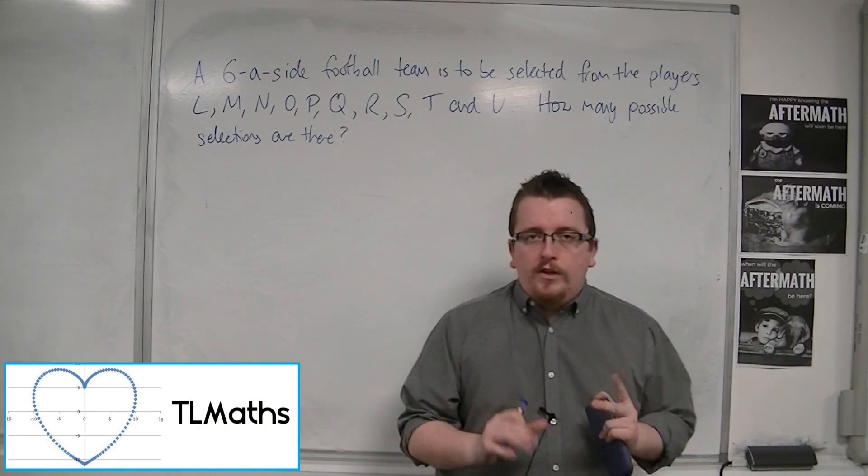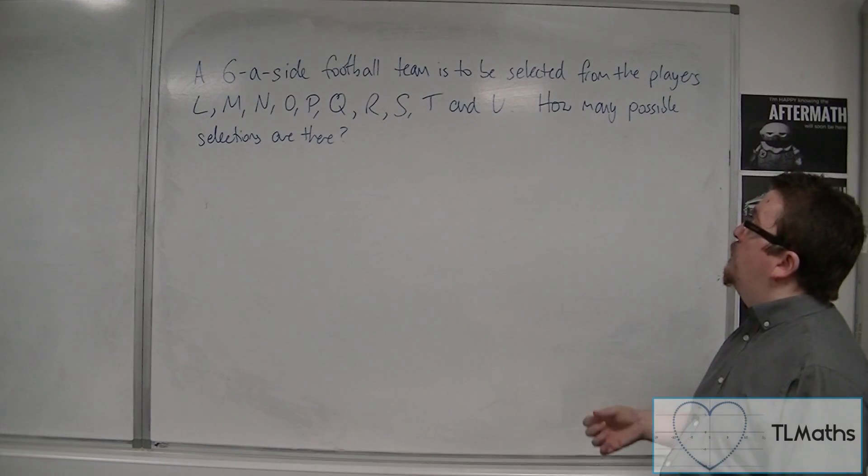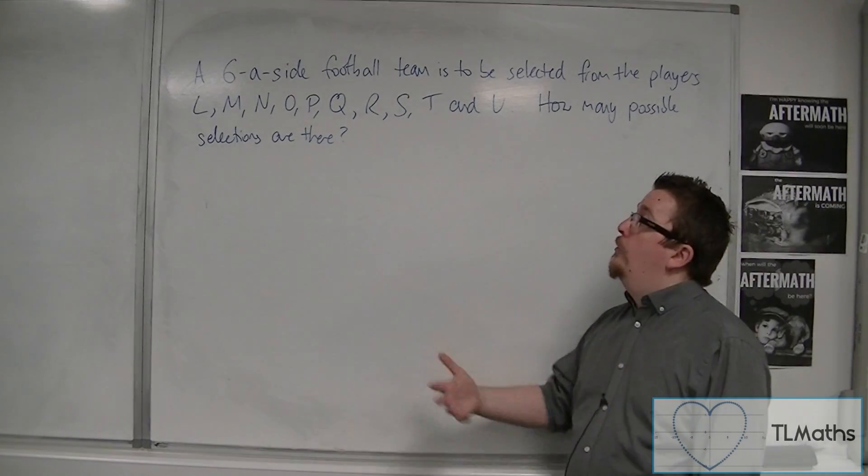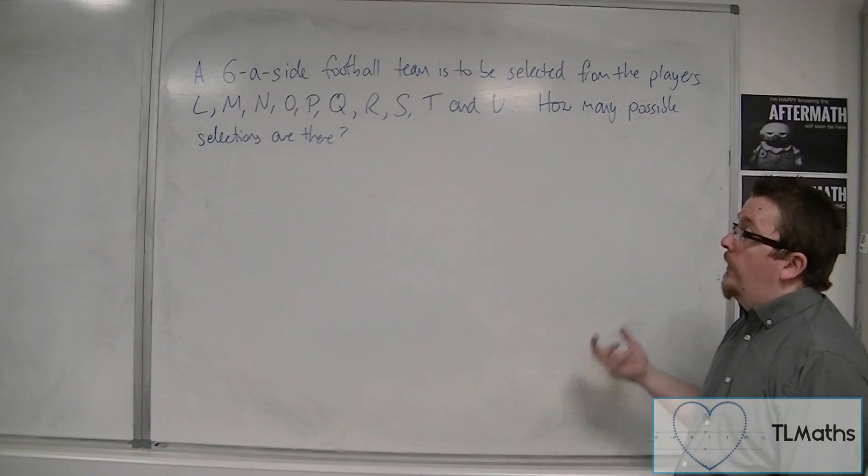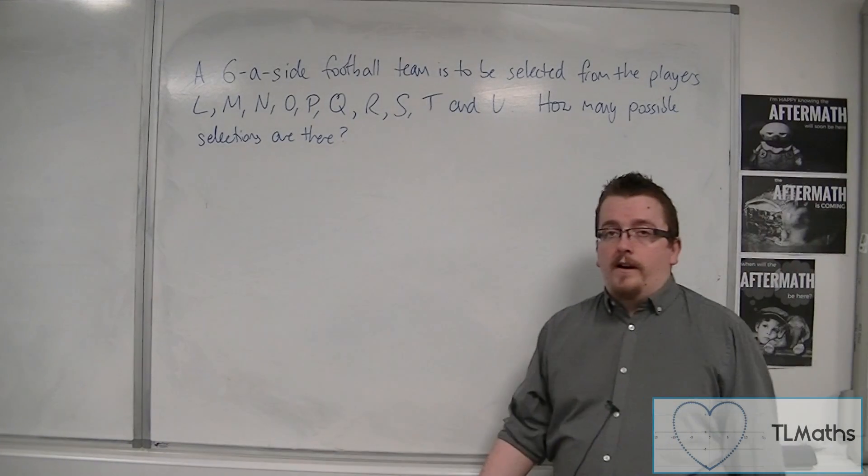So let's have a look at an example. A six-a-side football team is to be selected from the players L, M, N, O, P, Q, R, S, T and U. How many possible selections are there?